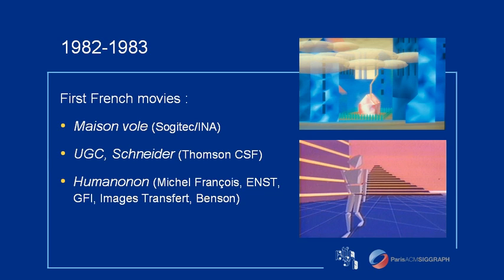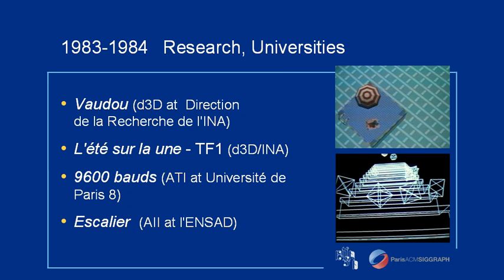It was the people who worked on the first two of these projects who would become the major computer graphics studio in Paris. Around the same time, several public institutions, schools and universities also began to make movies. First and mainly at INA, which was a main public research institution about TV, Jean-Charles Ourcad started to work on 3D and was soon joined by two other people. At Paris University, a group of researchers founded ATI — Art et Technologie de l'Image, not the AMD ATI — and began to make artistic films.